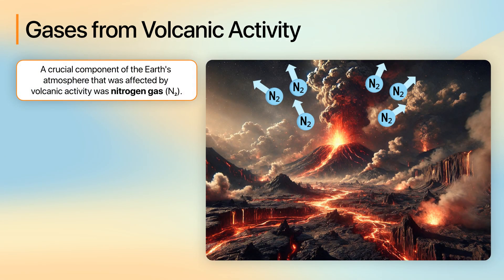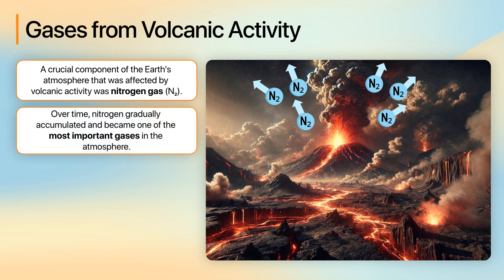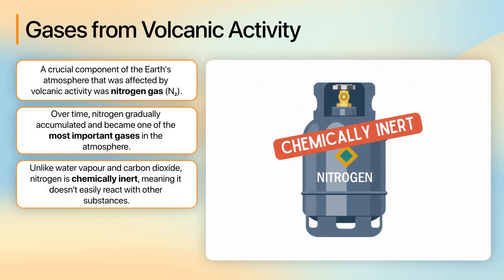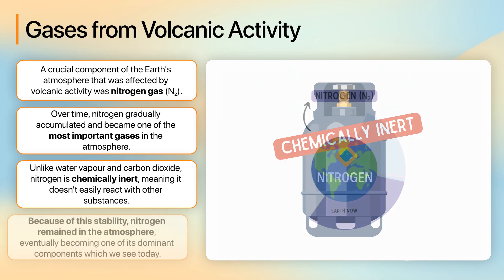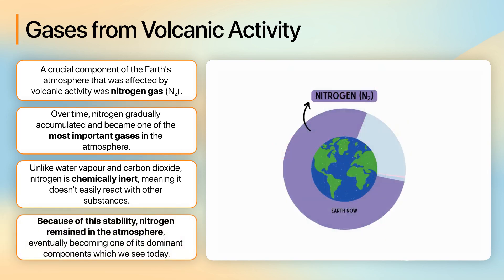A crucial component of the Earth's atmosphere that was affected by volcanic activity was nitrogen gas, N2. Over time, nitrogen gradually accumulated and became one of the most important gases in the atmosphere. Unlike water vapour and carbon dioxide, nitrogen is chemically inert, meaning it doesn't easily react with other substances. Because of this stability, nitrogen remained in the atmosphere, eventually becoming one of its dominant components, which we see today.